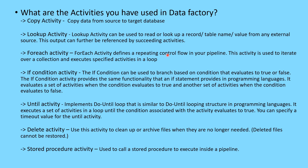The If Condition activity is similar to an if statement in programming. It evaluates to either true or false — if true, a certain set of activities is performed; if false, another set is performed. You define activities inside the true or false branches. The Until activity implements a do-until loop structure similar to programming, and it executes a set of activities inside the loop until a particular condition is satisfied.